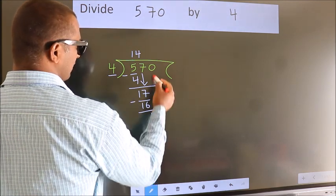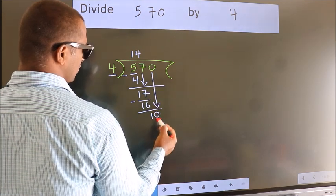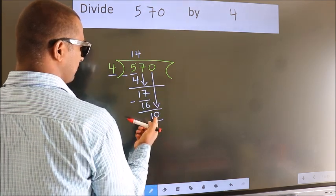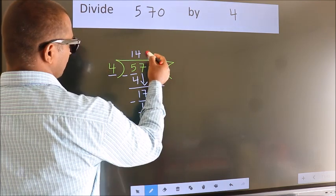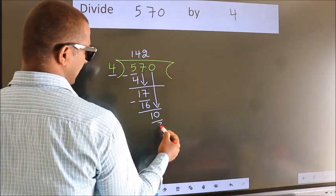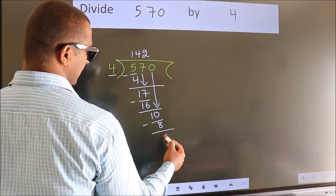After this, bring down the next number. So, 0 down. So, 10. A number close to 10 in the 4 table is 4 times 2 equals 8. Now we subtract. We get 2.